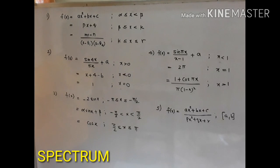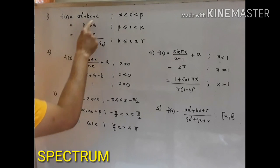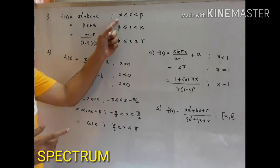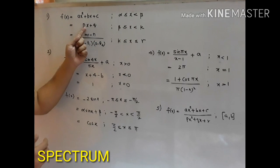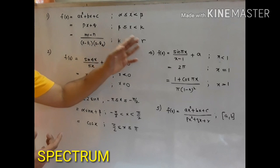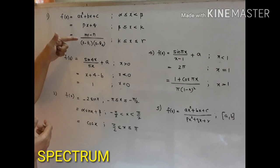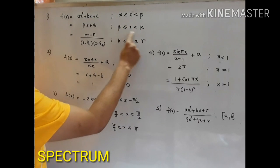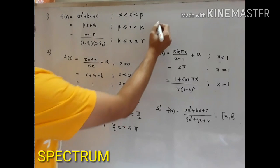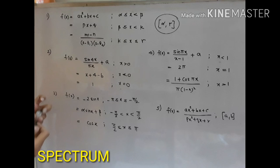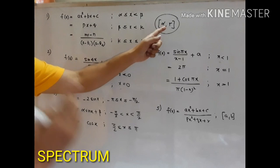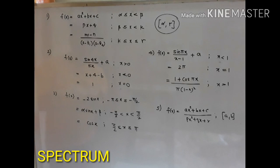The next very important type of question is where they give you a function which has different definitions over different intervals. For example, a function may have a quadratic definition in the subinterval alpha to beta, a linear definition px plus q in the subinterval beta to gamma, and another definition from k to gamma. They give this kind of piecewise function and ask you to discuss continuity in the entire domain, for example the closed interval alpha to gamma.